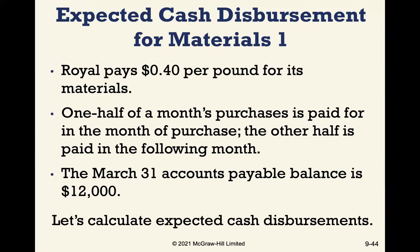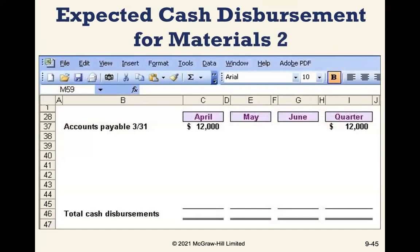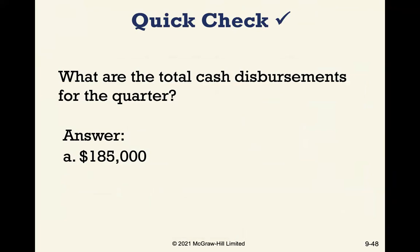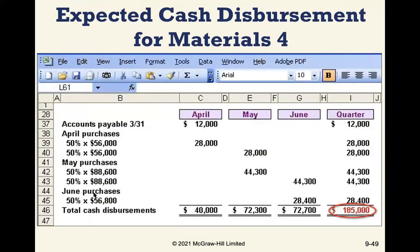The March 31st accounts payable balance is $12,000. For cash disbursements, we start April with that accounts payable balance, then pay 50% of April's purchases in April and 50% in May. The dollar amounts are based on $0.40 per pound and the pounds needed each month. Total cash disbursements for materials for the quarter are $185,000, derived simply by tracking the 50% payment pattern for each month's purchases.